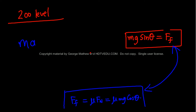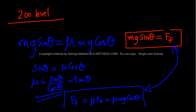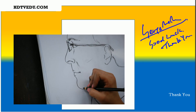Combining these two expressions: mg sin theta equals mu times mg cos theta. You can cancel m and g, giving sin theta equals mu cos theta, or mu equals sin theta over cos theta, which is tan theta. George Matthew signing off — good luck.